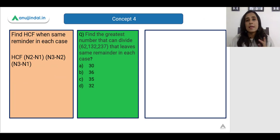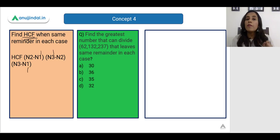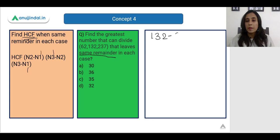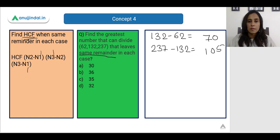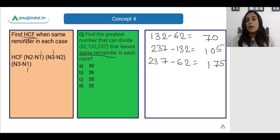Now let us see how to find the HCF when given the same remainder. We subtract each number from every other number to get a set of differences, then find the HCF of those differences. For example, the question asks: what is the greatest number that divides 62, 132, and 237 leaving the same remainder in each case? We compute: 132 − 62 = 70, 237 − 132 = 105, and 237 − 62 = 175.